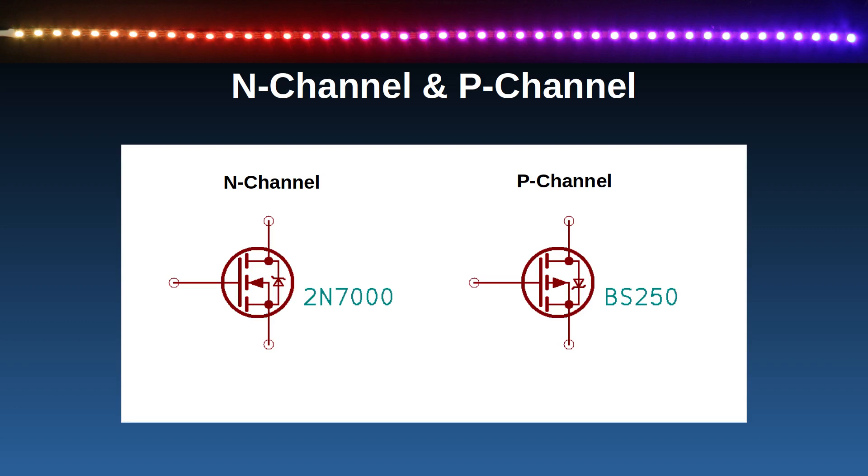You'll notice that these diagrams look differently to the symbols shown previously. As this is a more advanced topic, I'll be using a more advanced tool for creating the diagrams. In the previous video, I used Fritzing. In this video, I'll be using KiCAD. The symbol on the left is for the N-channel MOSFET. This is the same as the previous diagram, but for two differences.